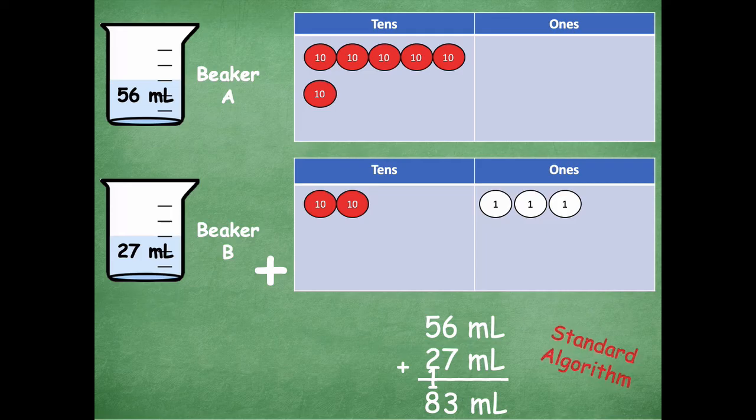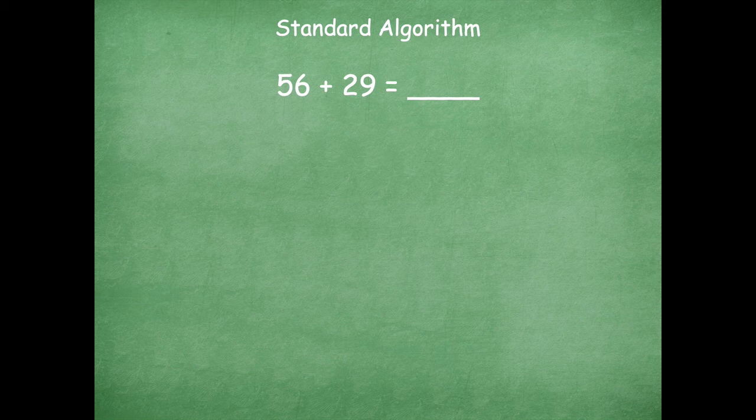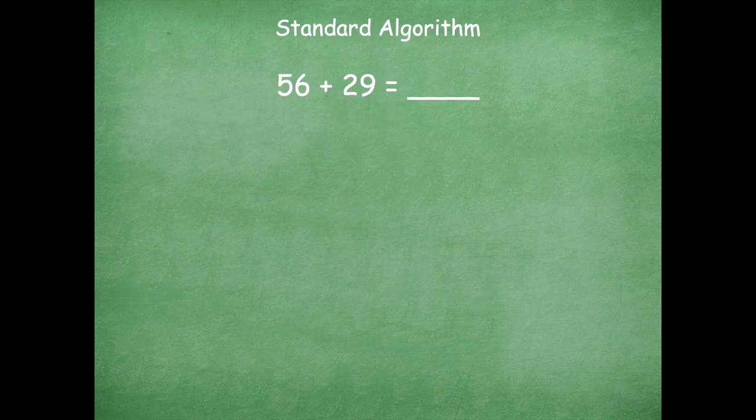So again friends this is how you use the standard algorithm. Let's take a look at another problem. Here we have 56 plus 29. Notice how this problem is written horizontally side to side. Make sure that when you're using the standard algorithm you are aligning your numbers up vertically where the numbers in the ones place line up, the numbers in the tens place line up, and so on. So you're nice and neat as you're rewriting in a vertical form.